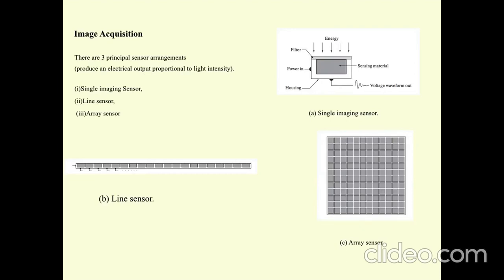Image Acquisition. Basic idea is the capture of image to process the scene. Basically, image acquisition generally means camera. There are three principal sensor arrangements: single imaging sensor, line sensor, array sensor.